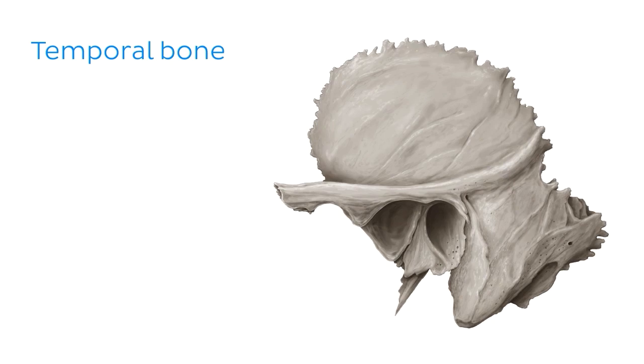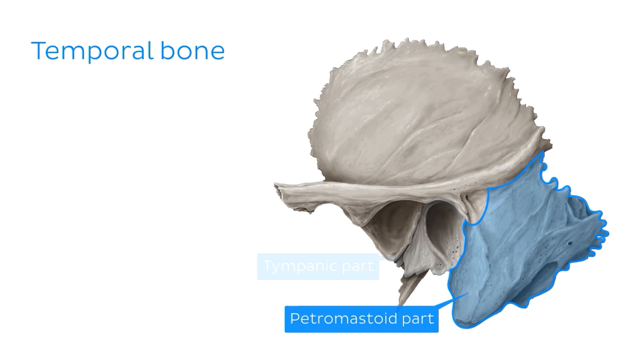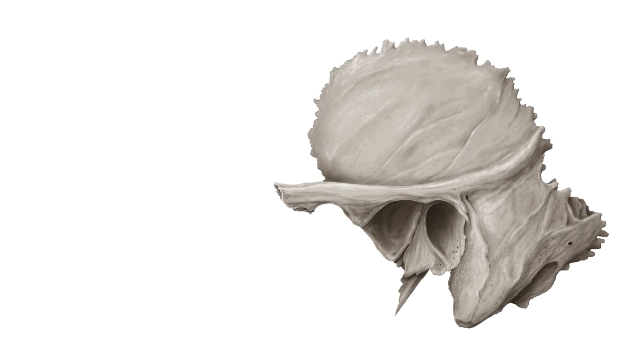If we zoom in on the lateral view of the skull and have a look at the temporal bone on its own, we can see that the temporal bone has four parts: the squamous part, the petromastoid part, the tympanic part and the styloid process. During this tutorial we'll be looking at each of these parts in detail. But first, let's begin by looking at some of the margins or borders of the temporal bone.